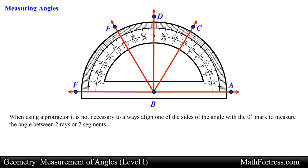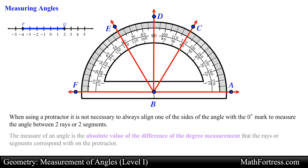When using a protractor it is not necessary to always align one of the sides of the angle with a zero degree mark to measure the angle between two rays or two segments.